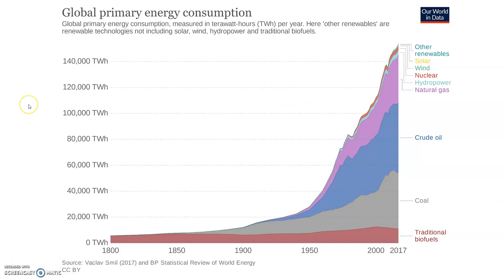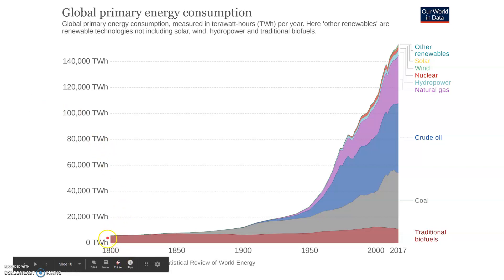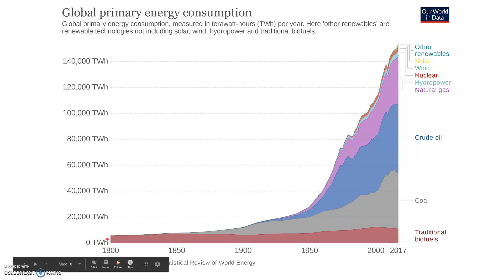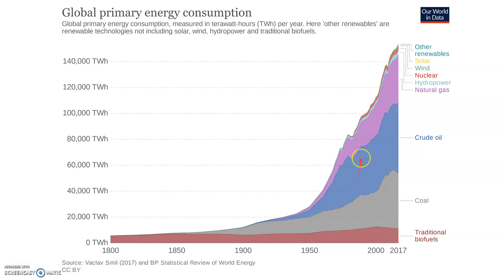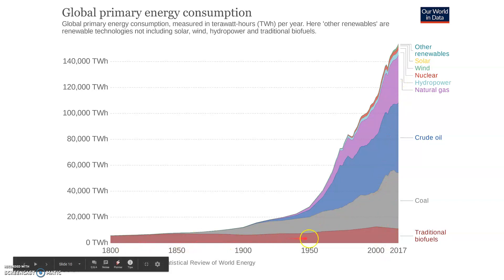This first graph looks at global primary energy consumption since 1800. For a long time, our main source of energy came from biofuels — we used wood to cook our food and heat our homes. Anything that we needed energy for came from biofuels. But then with the discovery of coal, we see that massively increased our use of energy. Most of our energy to this day still comes from fossil fuels, while our use of biofuels hasn't really changed all that much.